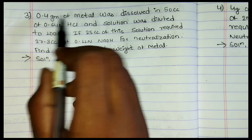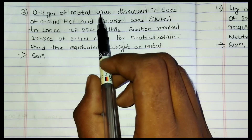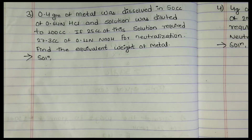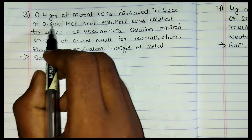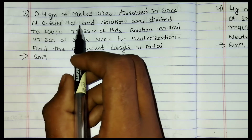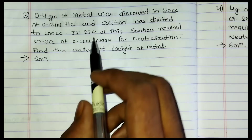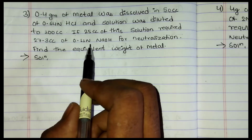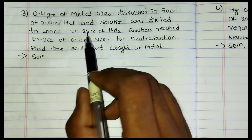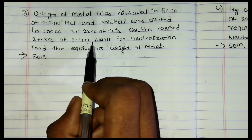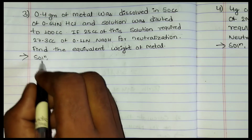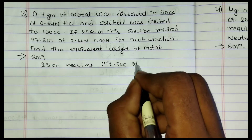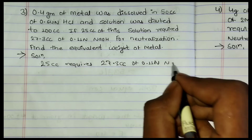Numerical 3: 0.4 gram of a metal was dissolved in 50 cc of 0.64N acid. The solution was diluted to 100 cc. If 25 cc of the solution required 27.3 cc of 0.11N HNO₃ for neutralization, find the equivalent weight of the metal.